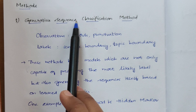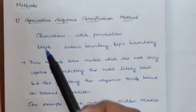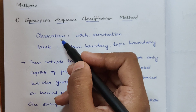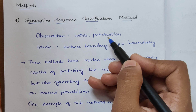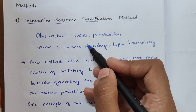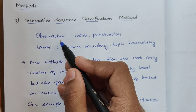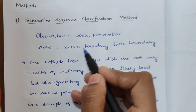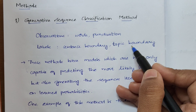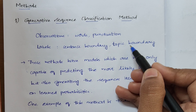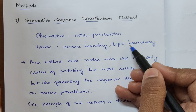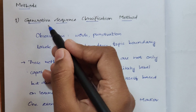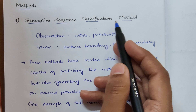Before understanding the Generative Sequence Classification method, you need to know two things: observations and labels. Observations are nothing but words or punctuation marks — when a large text is given, the words and punctuation marks in it are the observations. Labels indicate whether something is a sentence boundary or a topic boundary, so you are labeling whether a particular part is a sentence boundary or a topic boundary.